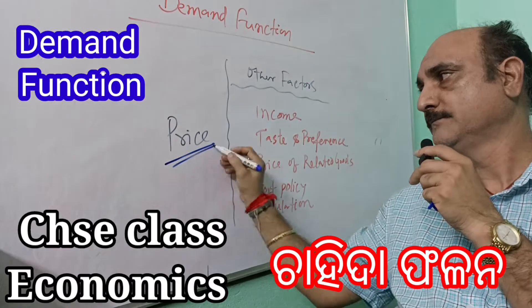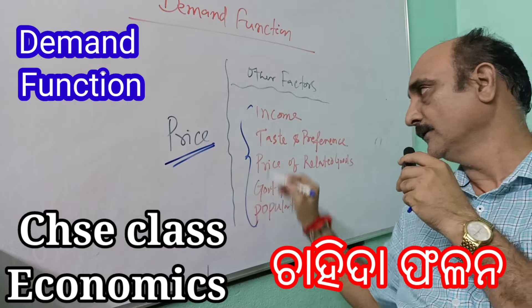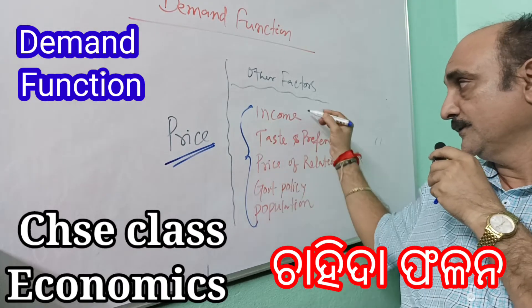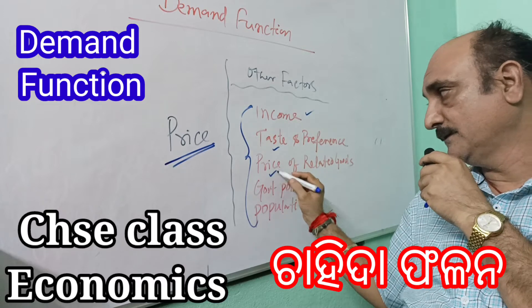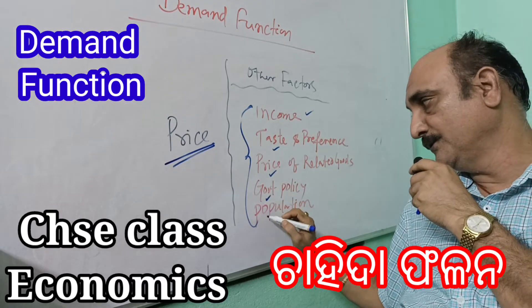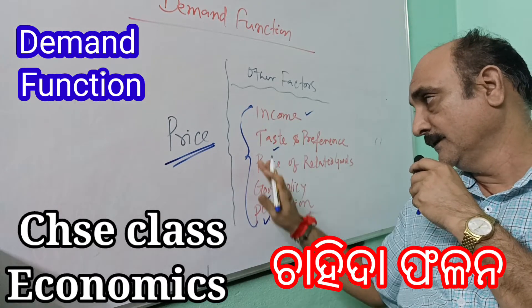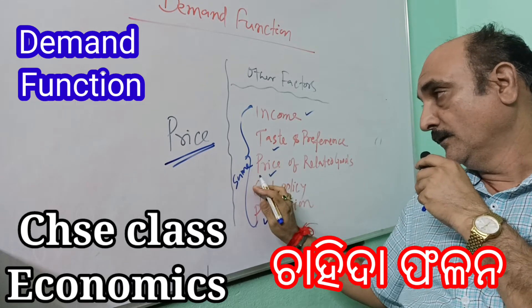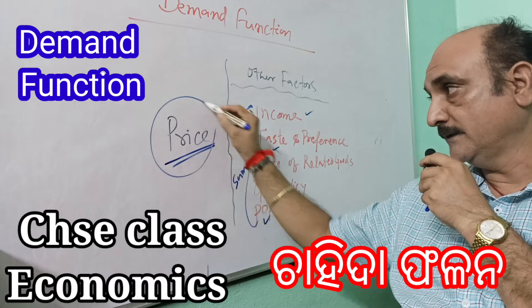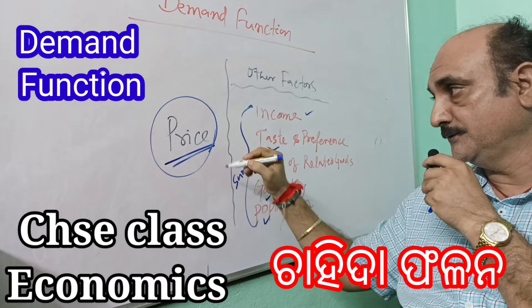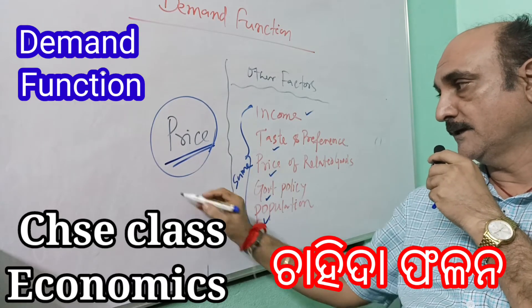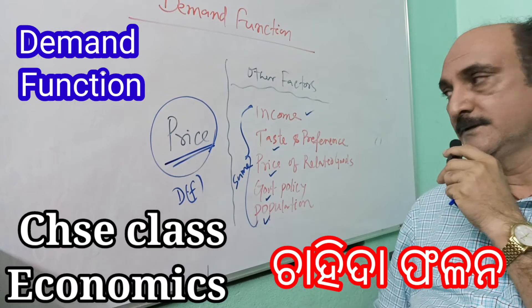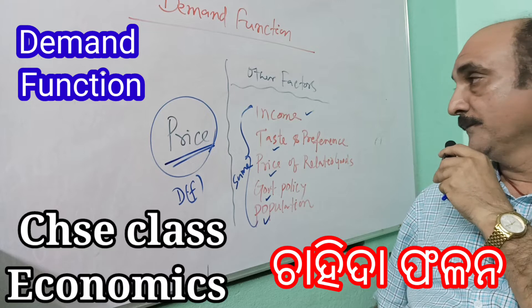On one hand we have price, and on the other hand we have other factors — such as income, taste and preference, price of related goods, government policy, and population — remaining the same, with no change. Only a change in price brings a change in demand. That is called the demand function.